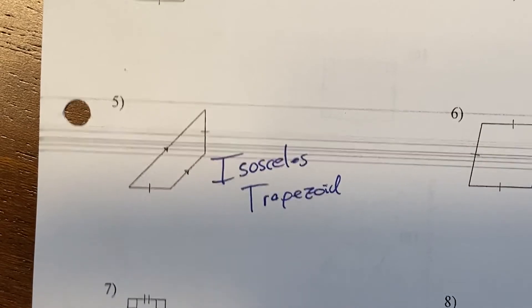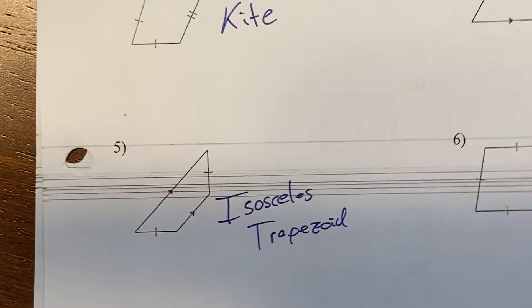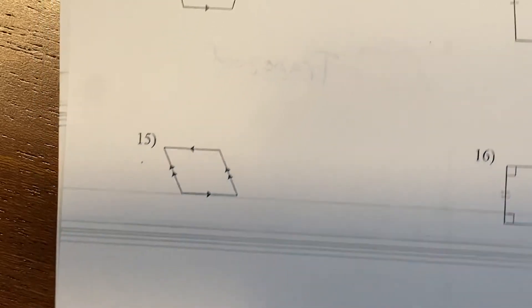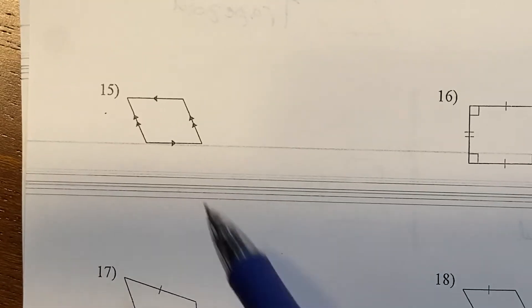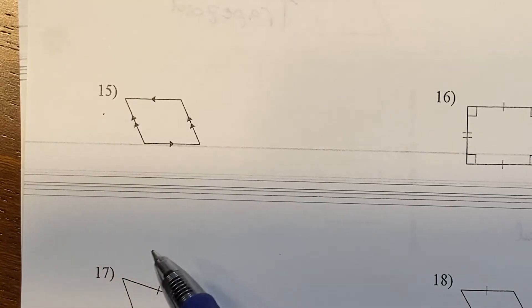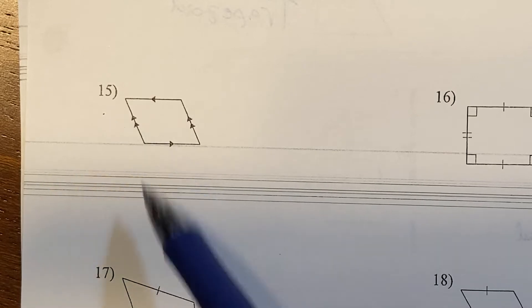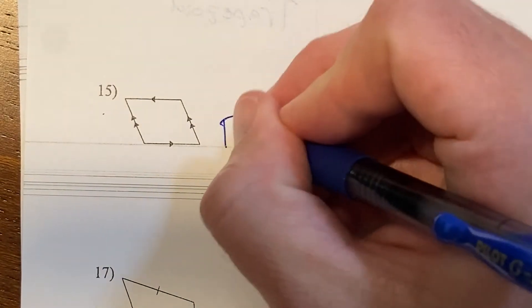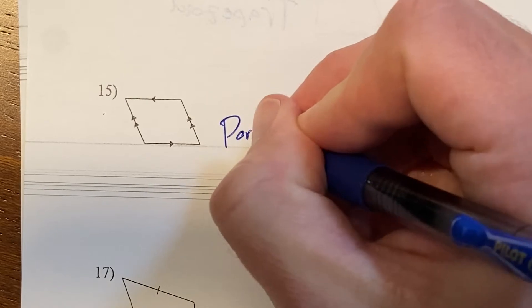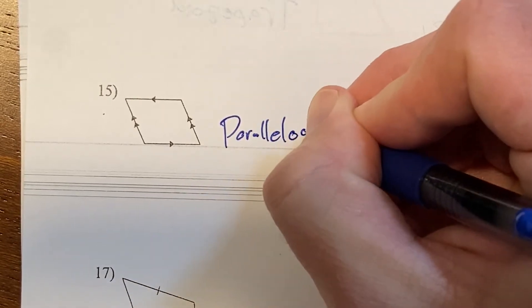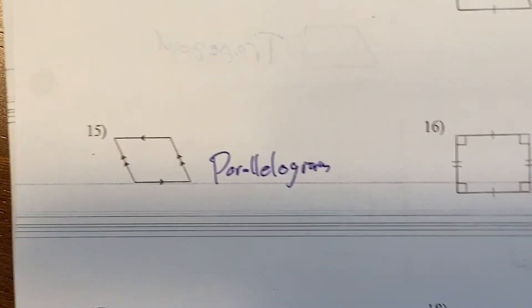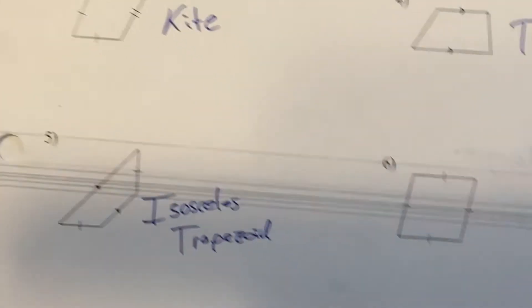Number 15: it doesn't say anything about the sides or the angles, but it has two sets of parallel lines. When you have two sets of parallel lines, that's a parallelogram. Go ahead and push pause, try to get all these other ones done, and see if you can just name them.